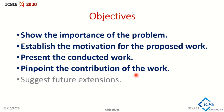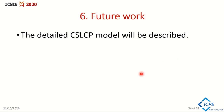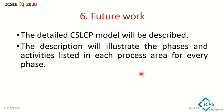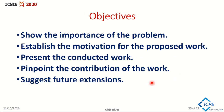Finally, I will talk about the future work. The detailed CLSP model will be described, illustrating the phases and activities listed in each process area for every phase in detail. The roles of the team members and the produced artifacts will be explained in the detailed CLSP model. To sum up, I achieved all the objectives: showed the importance of the problem, established the motivation for the proposed work, presented the conducted work, pinpointed the contribution of the work, and suggested future extensions.